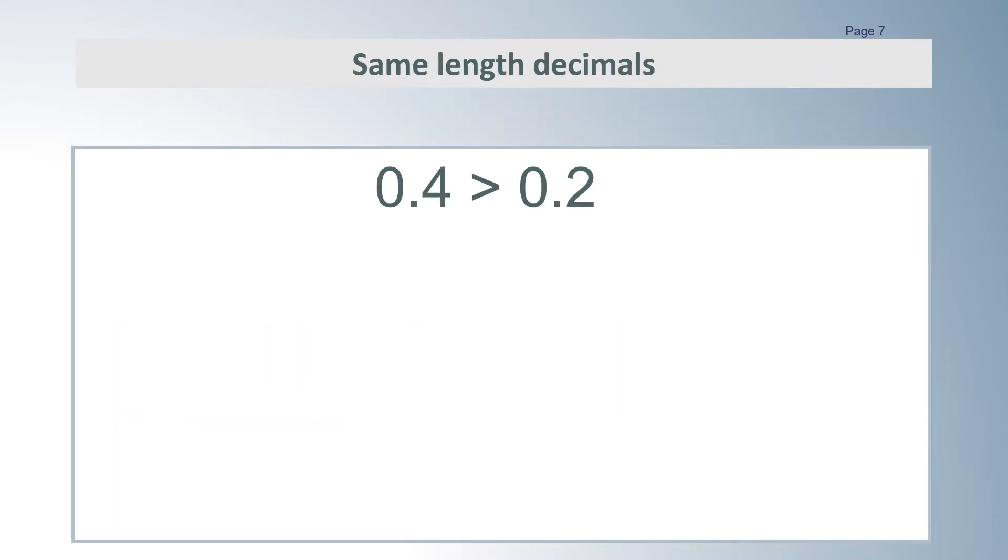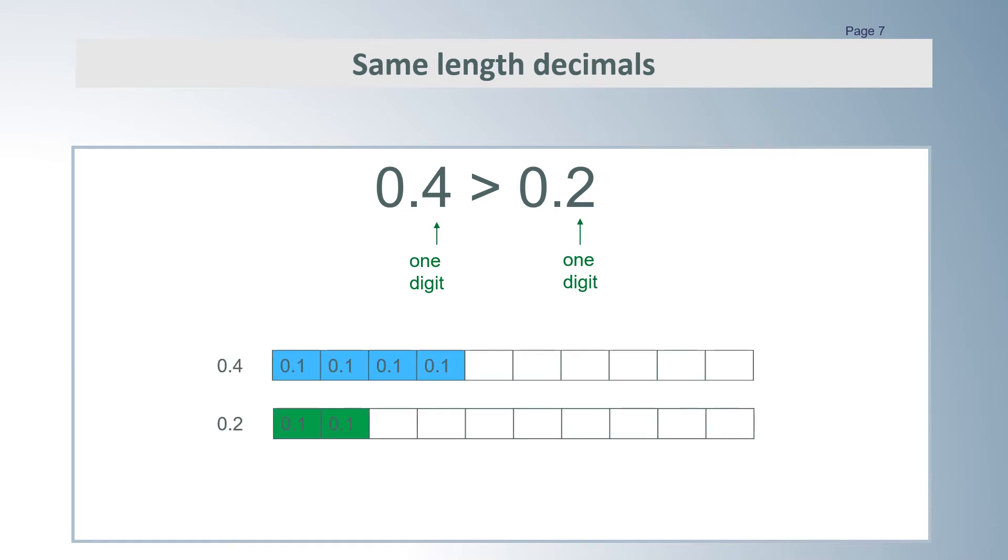0.4 is greater than 0.2. These decimal numerals are the same length. Both 0.4 and 0.2 have just one digit after the decimal point. The 4 is 4 tenths and the 2 is 2 tenths. We can compare these the way we do whole numbers. You can see the bar representation here.